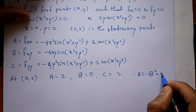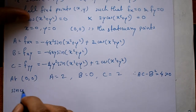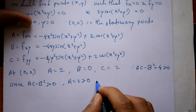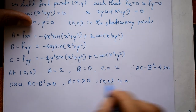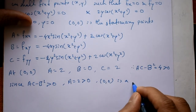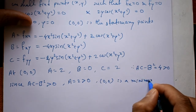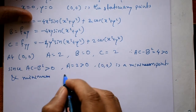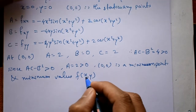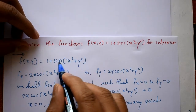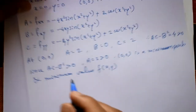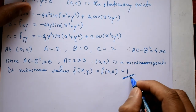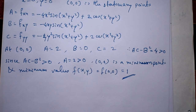Therefore, AC − B² = 2·2 − 0 = 4, which is greater than 0, and A = 2 is also greater than 0. So the point (0, 0) is a minimum point. The minimum value is f(0, 0) = 1 + sin(0) = 1 + 0 = 1. Please subscribe, comment, and like this video.